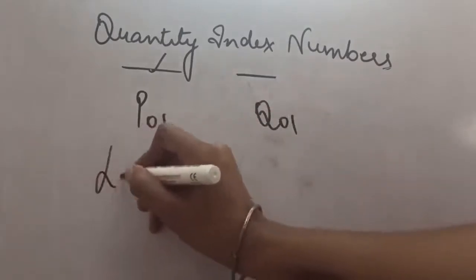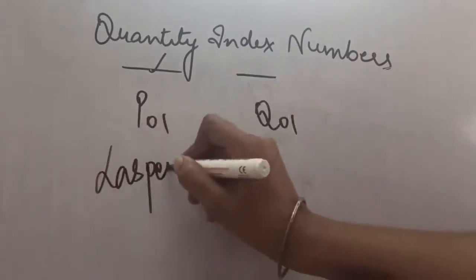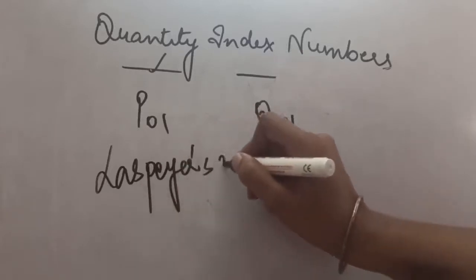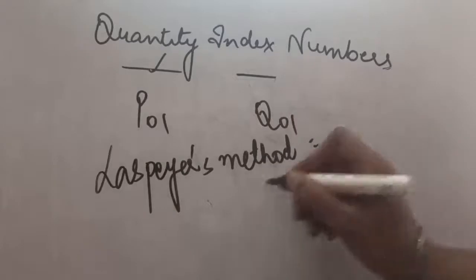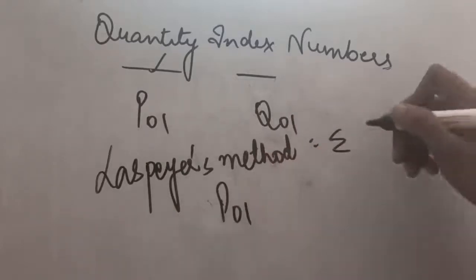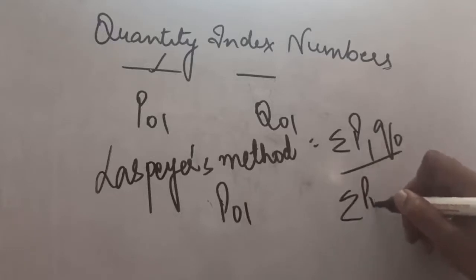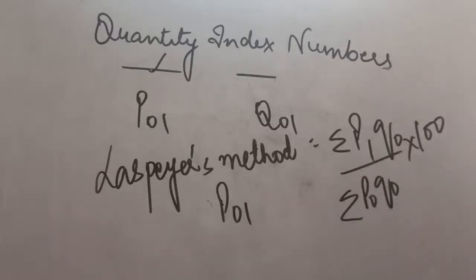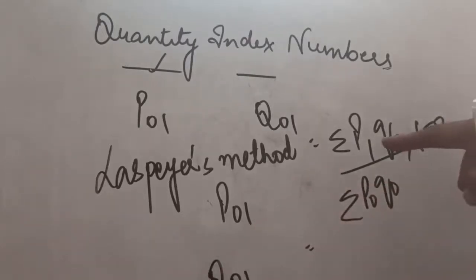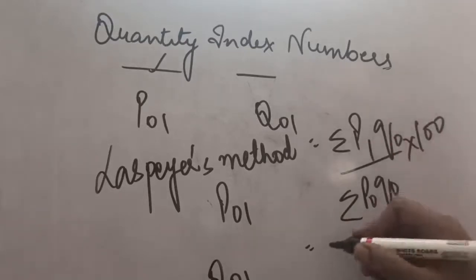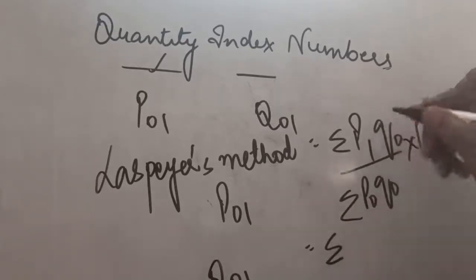For calculating, for example, if I take the example of Laspeyres' method, we all have seen that the formula for Laspeyres for calculating the price index is Sigma P1 Q0 divided by Sigma P0 Q0 into 100. Now, if I have to calculate the Quantity Index, what I will do? I will be replacing Q in the place of P and P in the place of Q. So, Sigma, instead of P, I will be writing Q now.